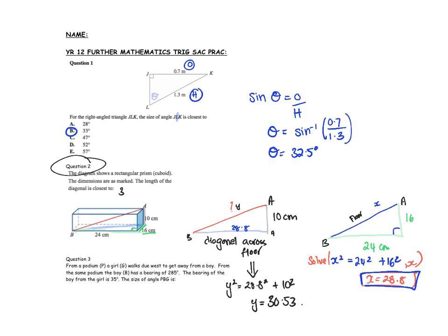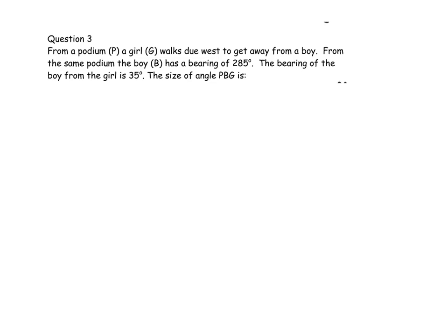From a podium P, a girl walks due west. We start drawing diagrams: here's my podium P, and I'll put a compass in there. Due west is straight along that line — that's where the girl is. From the same podium, a boy has a bearing of 285. A bearing starts at north, and 270 would be due west, so 285 is a bit further around.